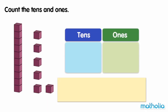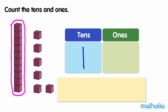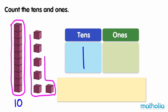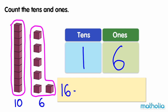Count the tens and ones. There is one ten. One ten is ten. There are six ones. Six ones are six. One ten and six ones make sixteen. Sixteen is equal to one ten, six ones.